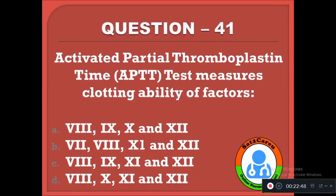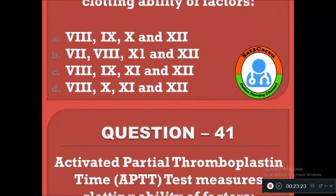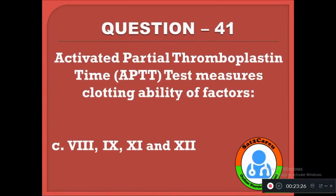Question 41: Activated Partial Thromboplastin Time (APTT) test measures the clotting ability of which factors? Option A: 8th, 9th, 10th, 12th; B: 7th, 8th, 11th, 12th; C: 8th, 9th, 11th, 12th; D: 8th, 10th, 11th, 12th. The correct answer is C — APTT measures factors 8, 9, 11, and 12.